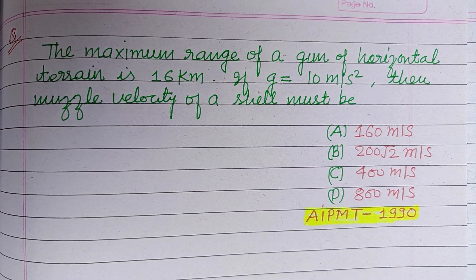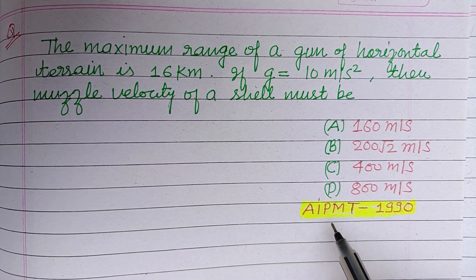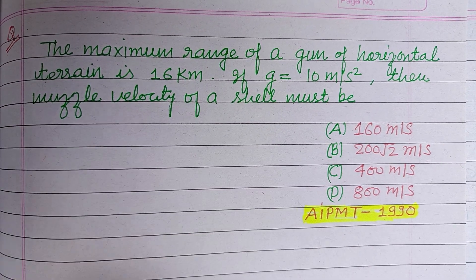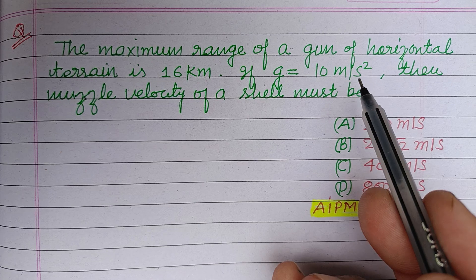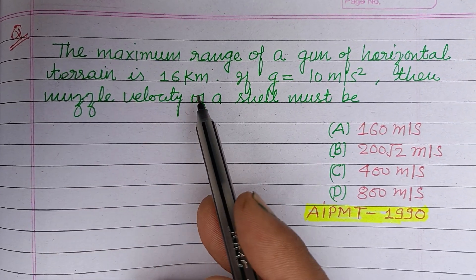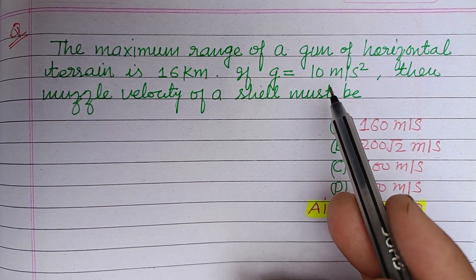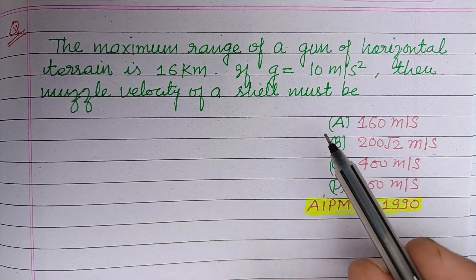Hello viewers, warm welcome to this YouTube channel. Question from All India PMT 1990: The maximum range of a gun on horizontal terrain is 16 kilometers. If g equals 10 meters per second squared, then the muzzle velocity of the shell must be...